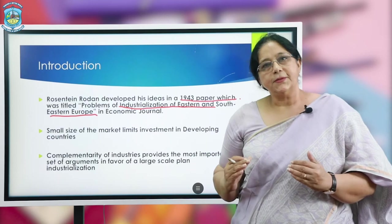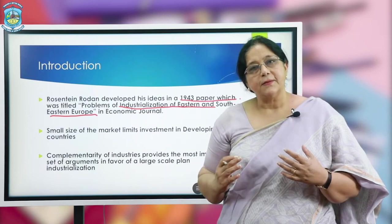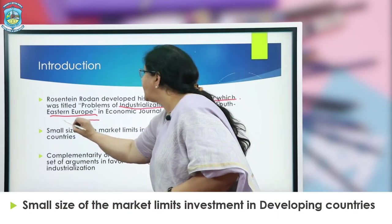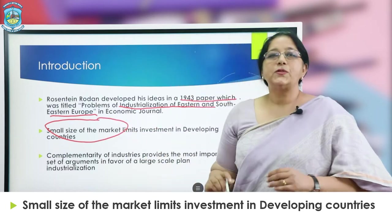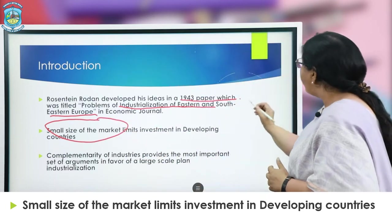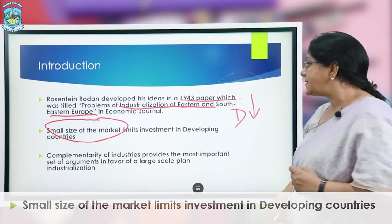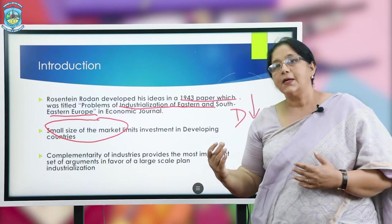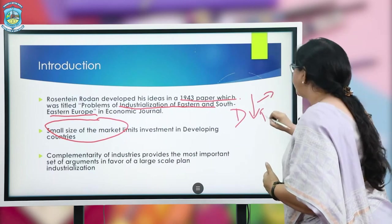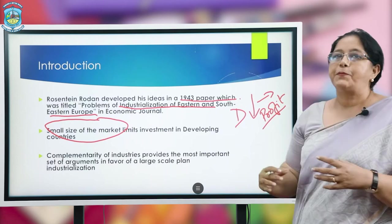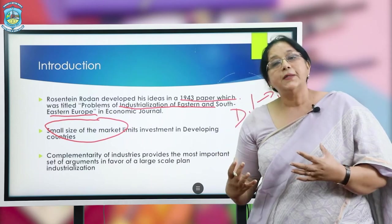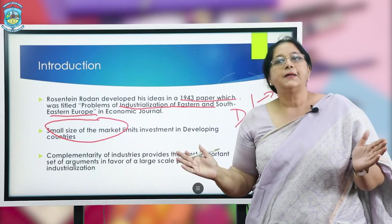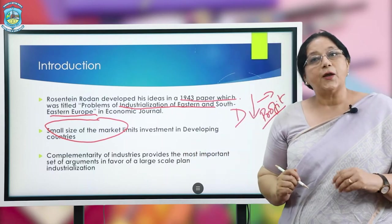According to Rosenstein-Rodan, the most important reason responsible for the low level of development is the small size of markets in developing countries. Small size of market means demand in those economies is very less, as a result of which individual investments made by investors are not profitable.